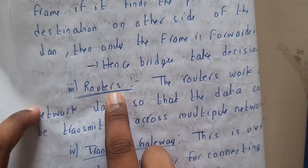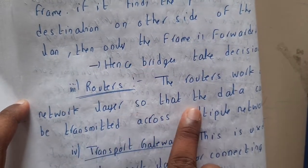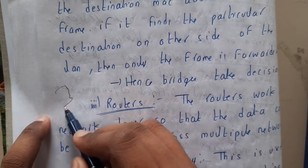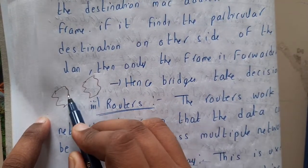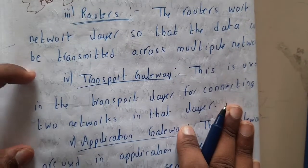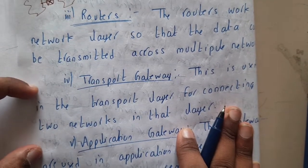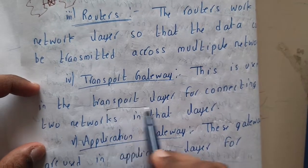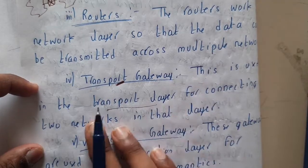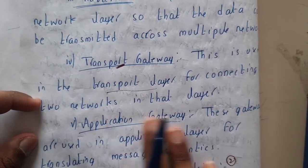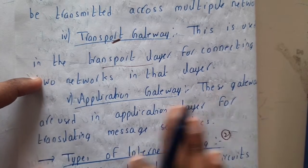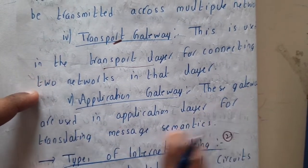Routers are used in the network layer — the third layer — so that data can be transmitted across multiple networks. A transport gateway is used in the transport layer for connecting two networks at that layer. An application gateway is used in the application layer for transmitting messages semantically.